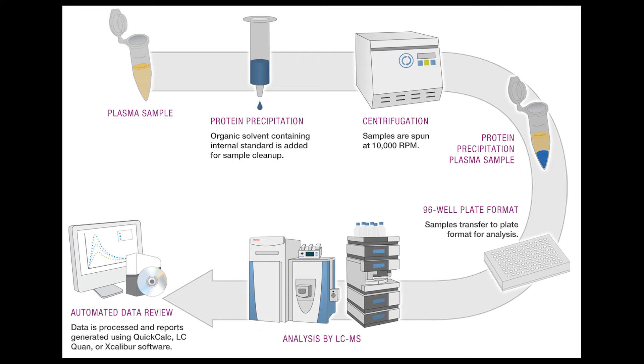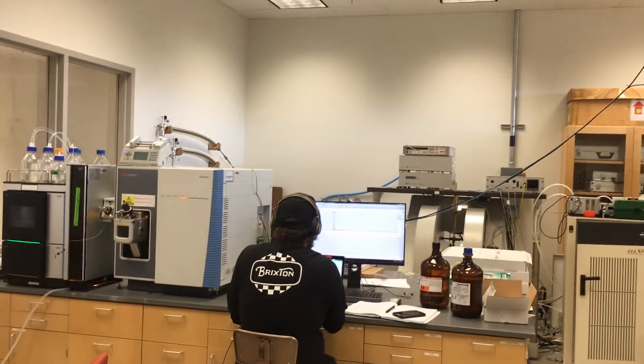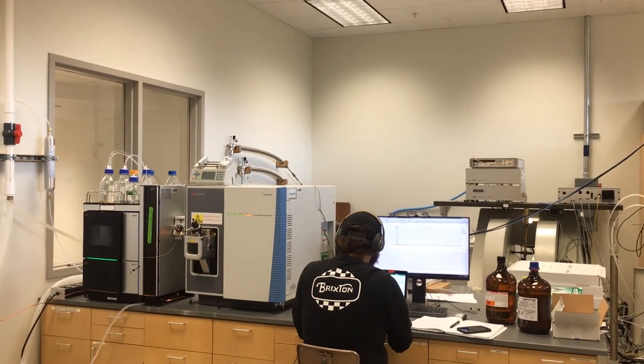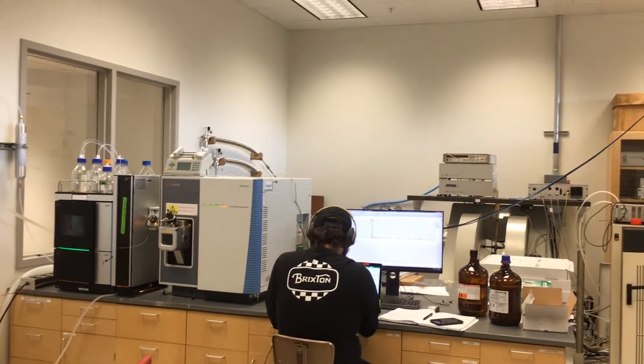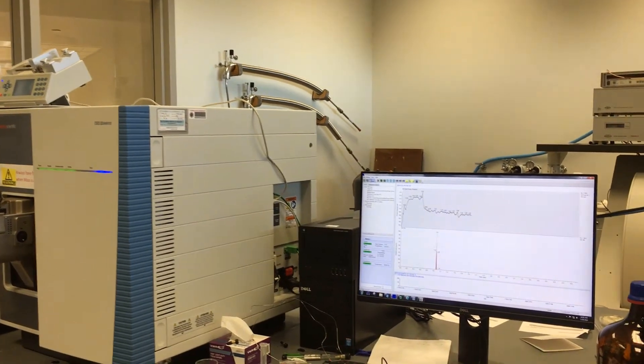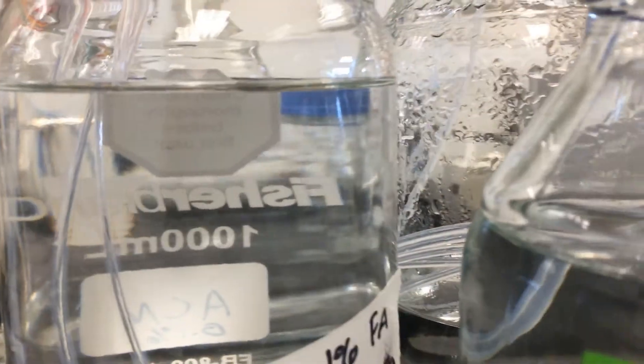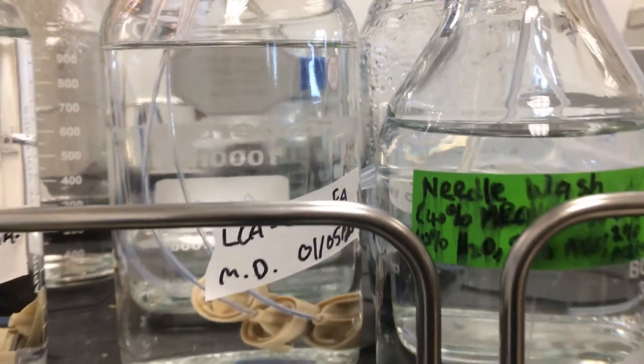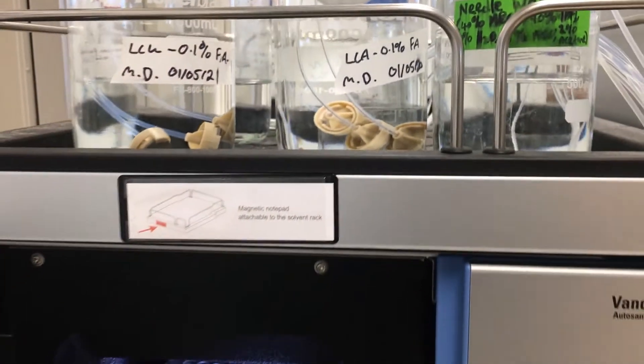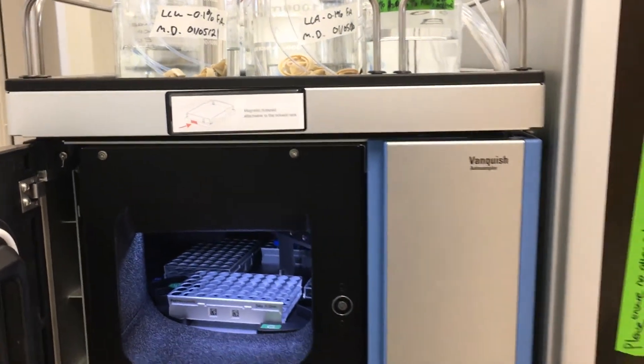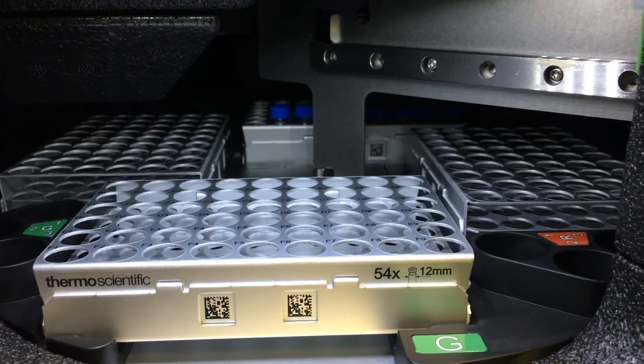The triple quadrupole mass spectrometer from Thermo Fisher, also known as QQQ, is a tandem MS method in which the first and third quadrupoles act as mass filters and the second causes fragmentation of the analyte through interaction with a collision gas. In this case, it is a radio frequency-only quadrupole and can be used in either SIM or scan mode. The method can be used to obtain structural information or for quantitation.